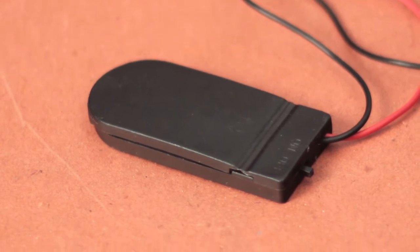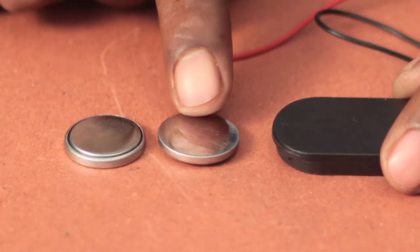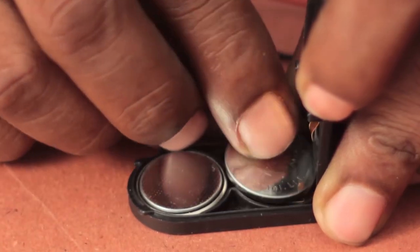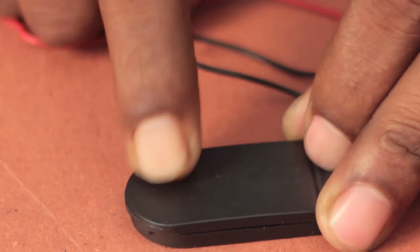Before starting the project, the tiny switch is set in the off mode. The positive side of the button cell is aligned to the positive mark on the battery. The process is repeated for the negative side as well. Just snap the cover and we are good to go.